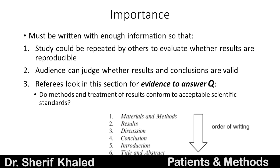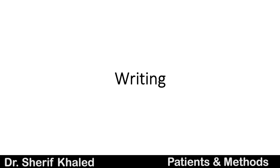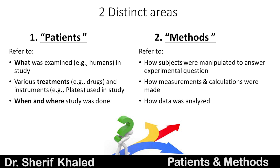This is the importance of this part. When you start to write, the order is: put the materials and methods first, then the results, then the discussion and conclusion, and then go back to write the introduction and title. The patients and methods section is divided into patients — what was examined, in our case humans — and the various treatment methods used, such as drugs, plates, or implants, plus when and where the study was done. The methods describe how subjects were manipulated to answer your research question, and how measurements, calculations, and data analysis were carried out.